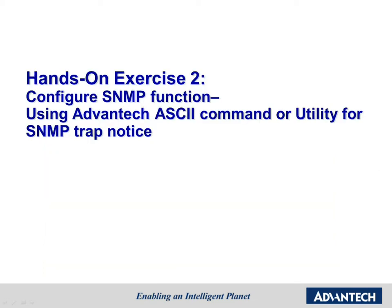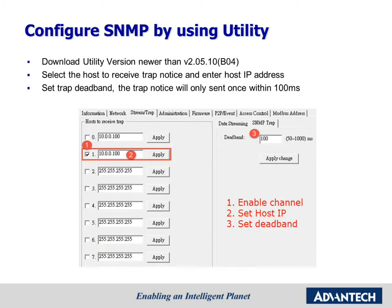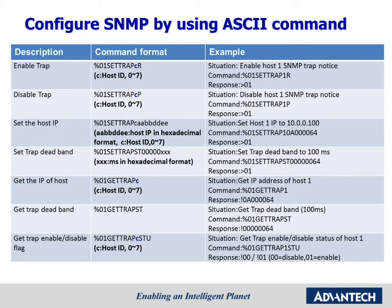Let's move on to the second hands-on exercise: configure the SNMP function using the Advantech ADAM utility for SNMP trap. If the module can send a trap message to the host IP address when an alarm event happens, the maximum number of hosts to receive traps is 8. In the utility version 2.5.10 beta04 or newer, you can set this configuration. First, enable the checkbox. Second, enter the host IP. Last, set the deadband. The deadband determines the minimum interval between triggers of two traps, and it is set to prevent traps from triggering due to noise. These are the ASCII commands for configuring SNMP. We can also use ASCII commands to configure the SNMP function.